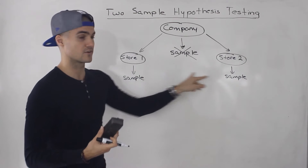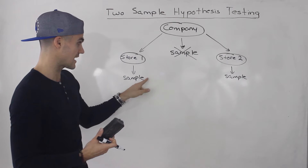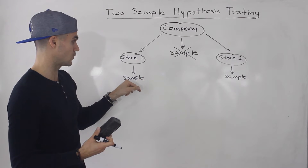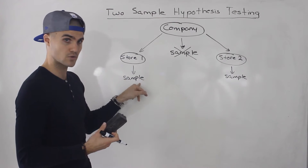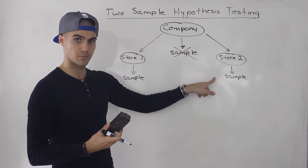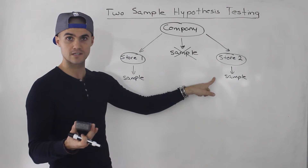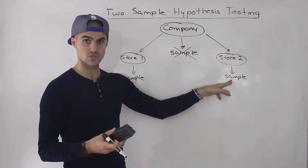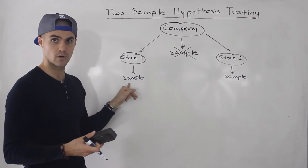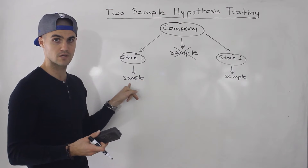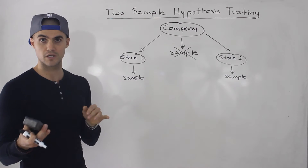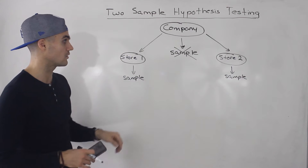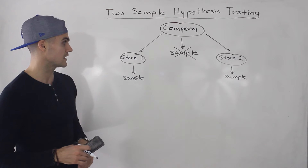So instead of working with one population and one sample, we split into two populations and take samples from both, testing whether there are potential differences in the effects of the promotion on store one versus store two. We could test whether they're different, or whether sales were greater for one store after the promotion — that would be a one-tail test. We can do one-tail or two-tail tests for two-sample hypothesis testing as well.